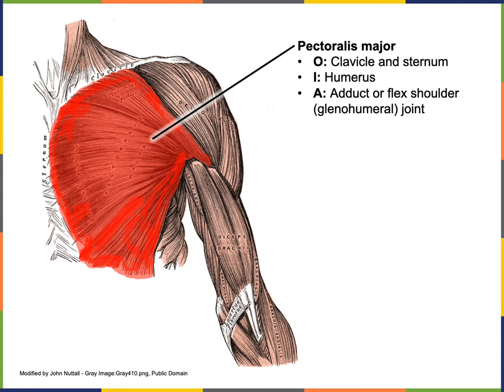Pectoralis major is a large superficial muscle found in the mammary region. Its origin — the stationary attachment — is along the clavicle and sternum, and it inserts on the humerus. When it contracts, it performs the action of adduction of the shoulder, moving the humerus back towards the midline through the coronal plane. Pectoralis major can also flex the shoulder, moving through the sagittal plane, raising the humerus anteriorly and superiorly.